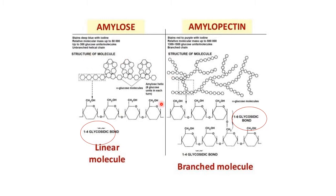Amylose is a linear molecule which has alpha-1,4 glycosidic bonds, and amylopectin is a branched molecule. Where the branching occurs, you will see alpha-1,6 glycosidic bonds, and the linear chains will have alpha-1,4 bonds.